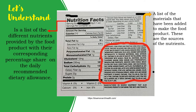What do we consider when buying food products at a store or supermarket? Of course, we consider the price. We also think about whether we really need the product. It's also important to check the expiration date — the product might be near its expiry. And most importantly, we consider the different nutrients we can get from that product.